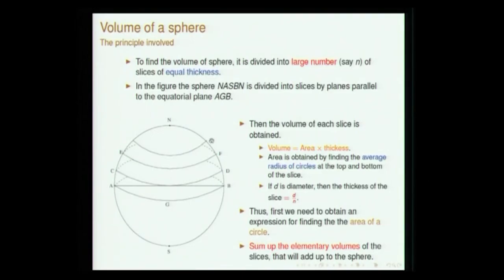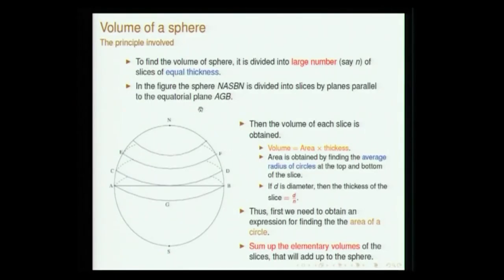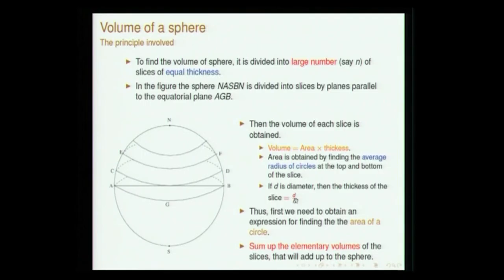Moving on to the first topic — volume of a sphere. To find the volume of a sphere, a sphere of diameter D is taken and sliced into n bits of equal thickness. You conceive of a sphere divided into n slices of equal thickness. The idea is to first find the volume of each slice, and then sum up the elementary volumes of all the slices, which gives the volume of the sphere. This is the overall procedure.